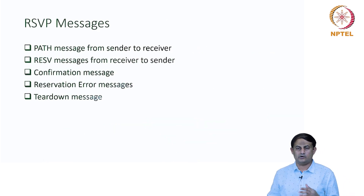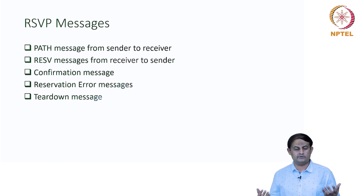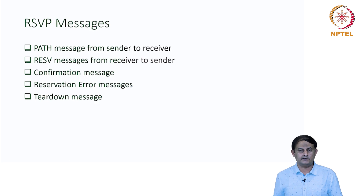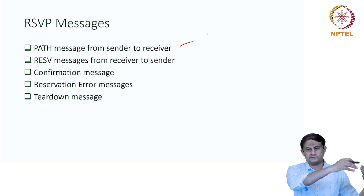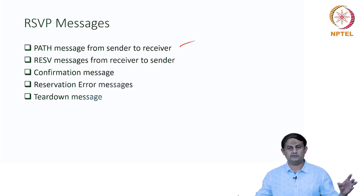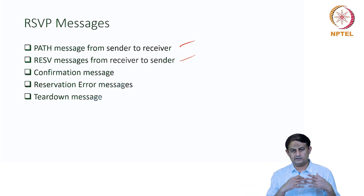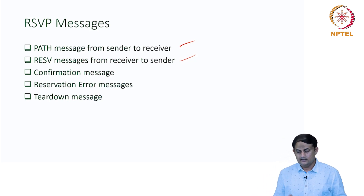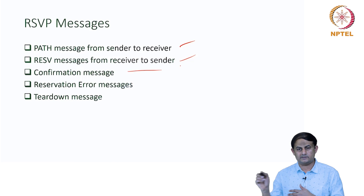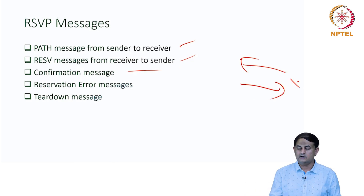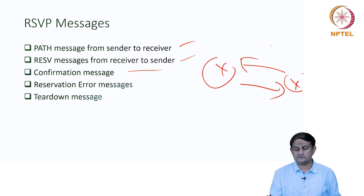Let us look at the different messages RSVP uses to operate — the types of messages it transmits. Two we have already seen: the path message, which goes from the sender to the receiver to identify the path, so that reservation can be done in the reverse direction; and the reservation message, which goes from the receiver to the sender in the reverse direction along the path the path message took. Confirmation messages are sent in response to reservation requests.